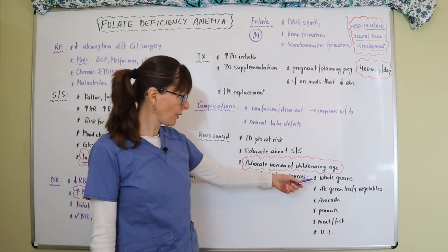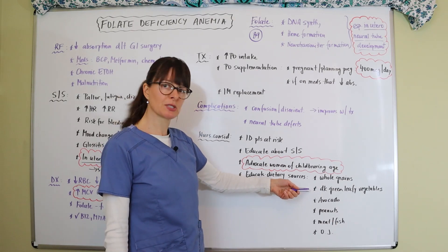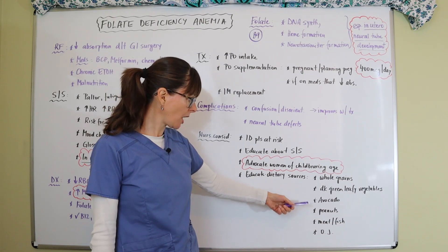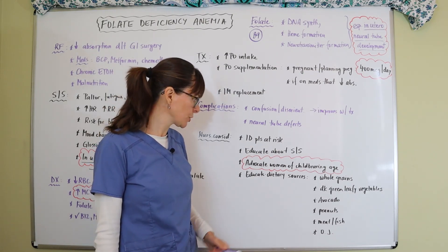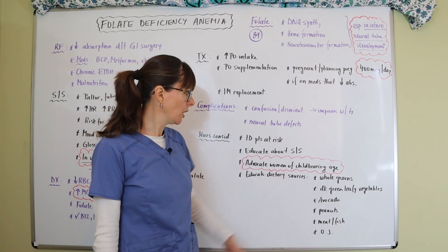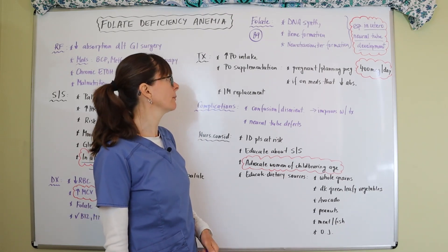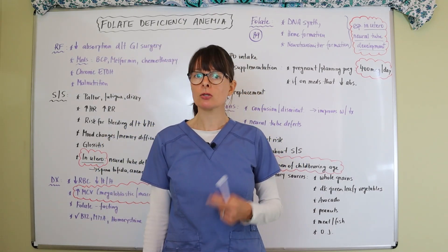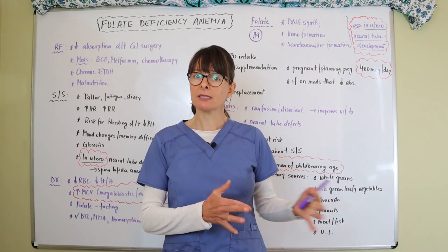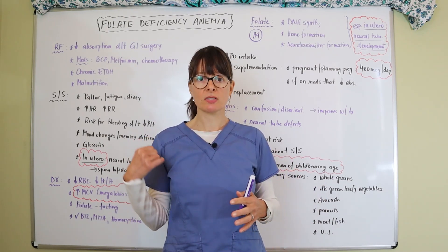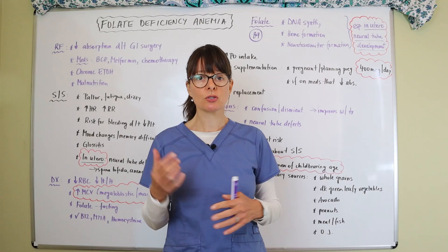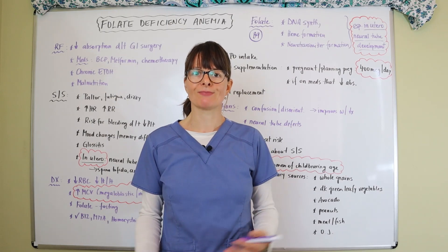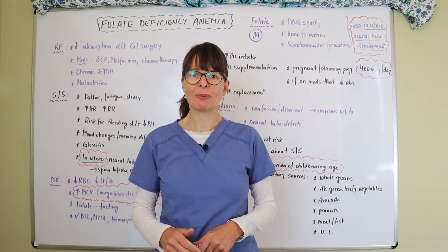We also want to educate patients about dietary sources of folate, which include whole grains, dark green leafy vegetables, avocado, peanuts, meat, fish, and orange juice. Thank you for watching this video on folate deficiency — also watch the related videos on B12 deficiency, which is very similar to folate deficiency, and on iron deficiency anemia, which is one of the most common anemias. Thanks for watching Nursing School Explained!